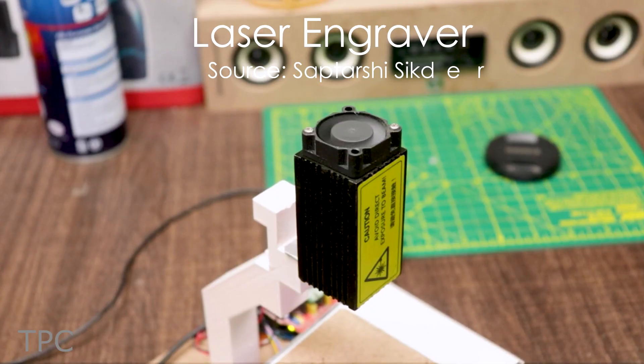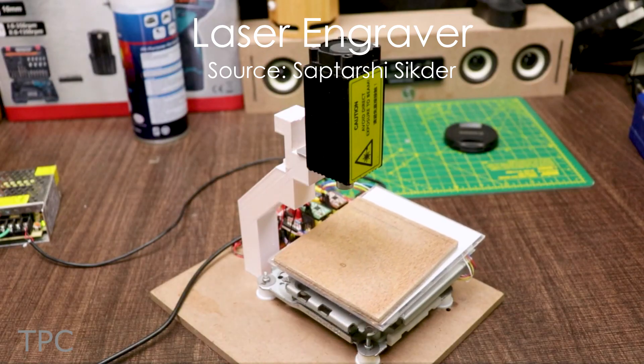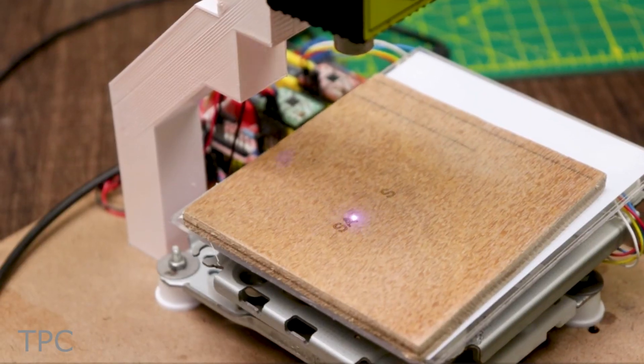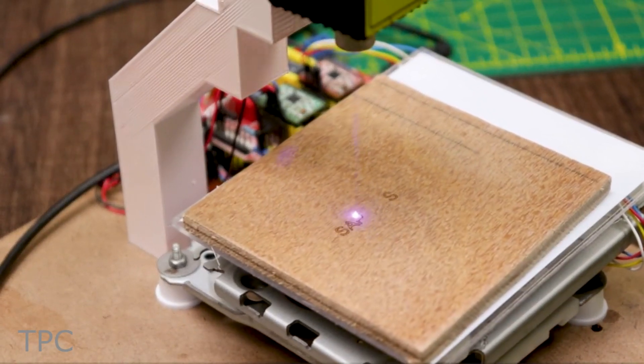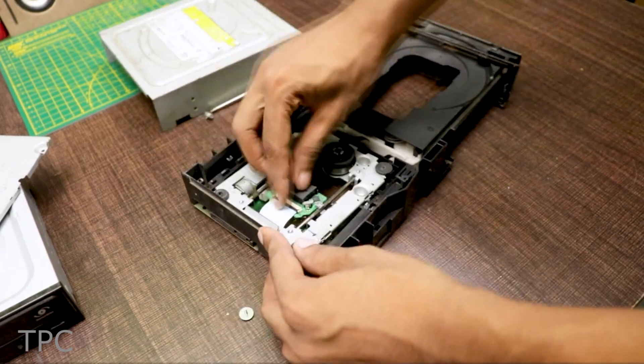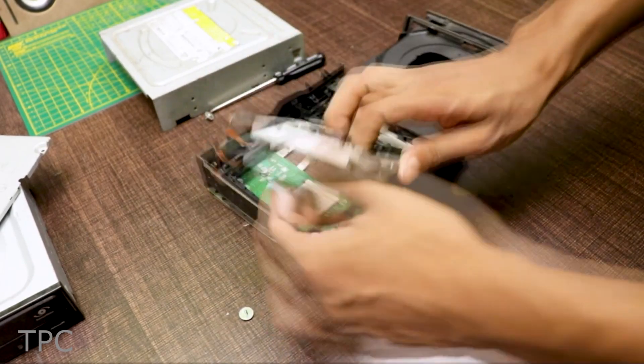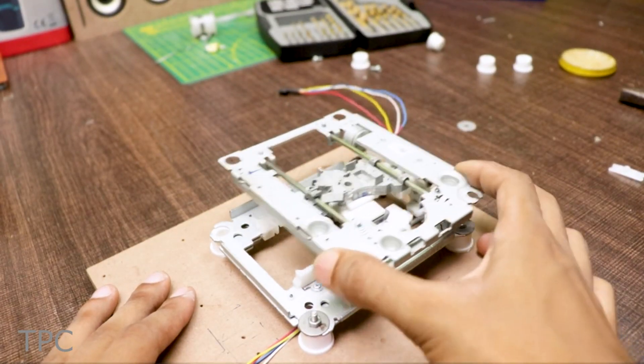This project uses a 1W 445 nm laser module. So before trying this one, make sure to take the necessary precautions. The project requires two DVD writer mechanisms, one for X-axis and another one for Y-axis.